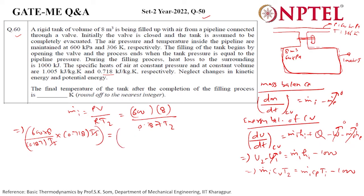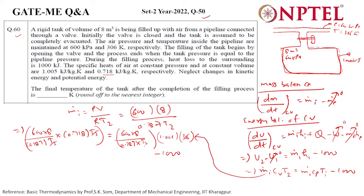Substituting the values: (600 × 8) / (0.287 × T2) × 0.718 × T2 = (600 × 8) / (0.287 × T2) × 1.005 × 306 minus 1000. Here T2 is the only unknown and all other values are known, so we can solve it. T2 comes out to be 395.388 Kelvin.